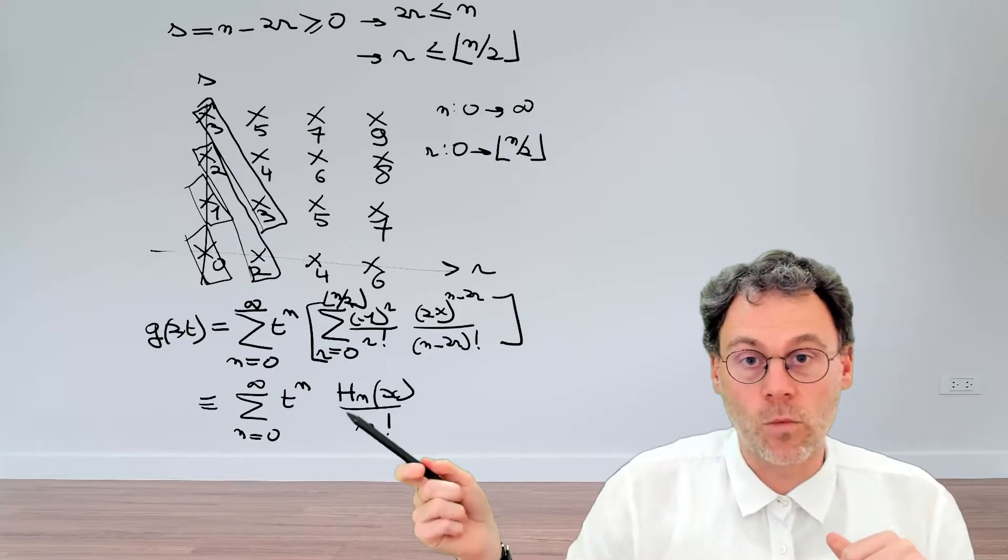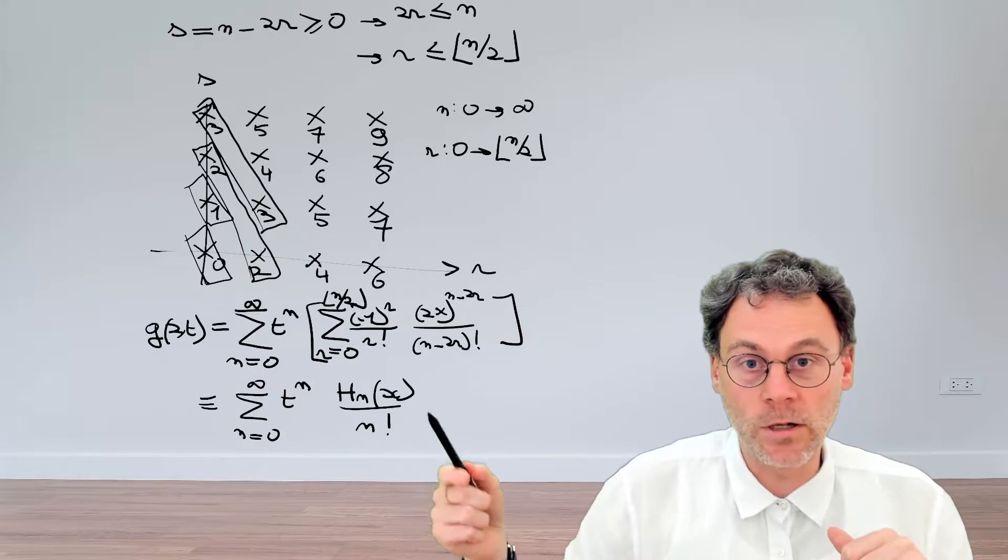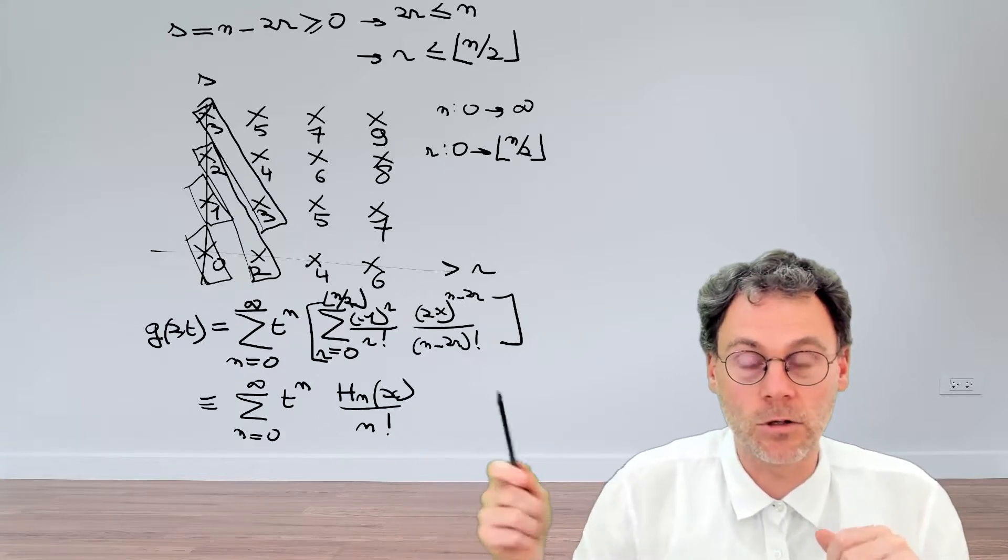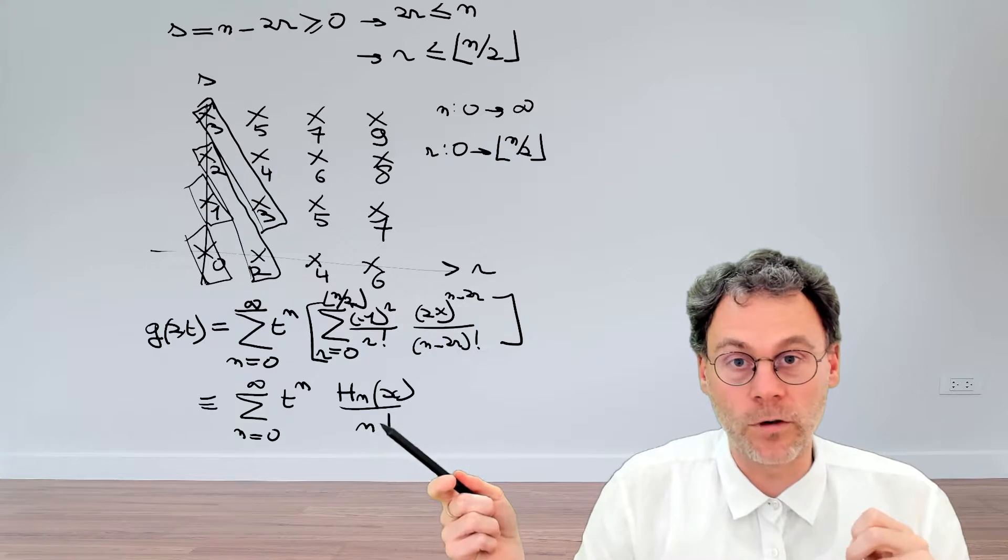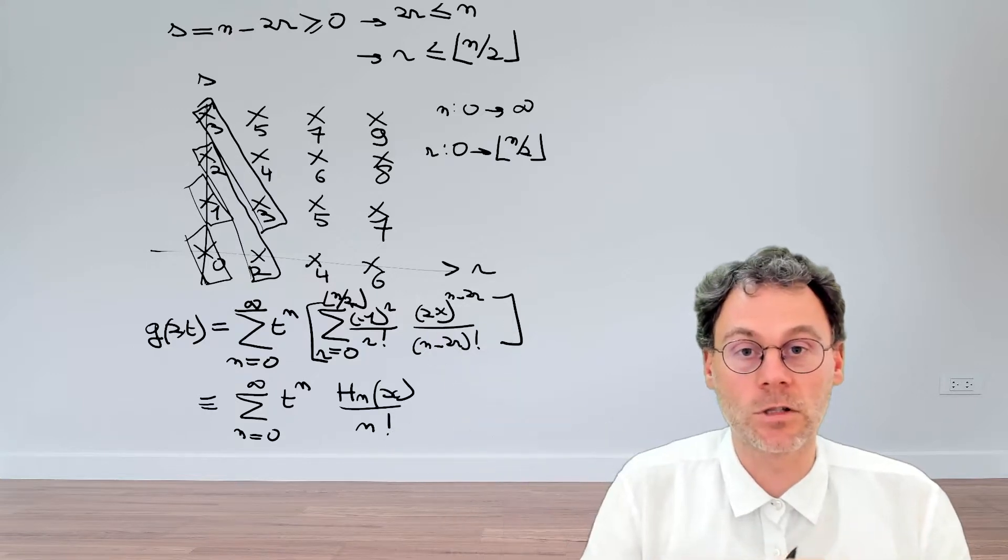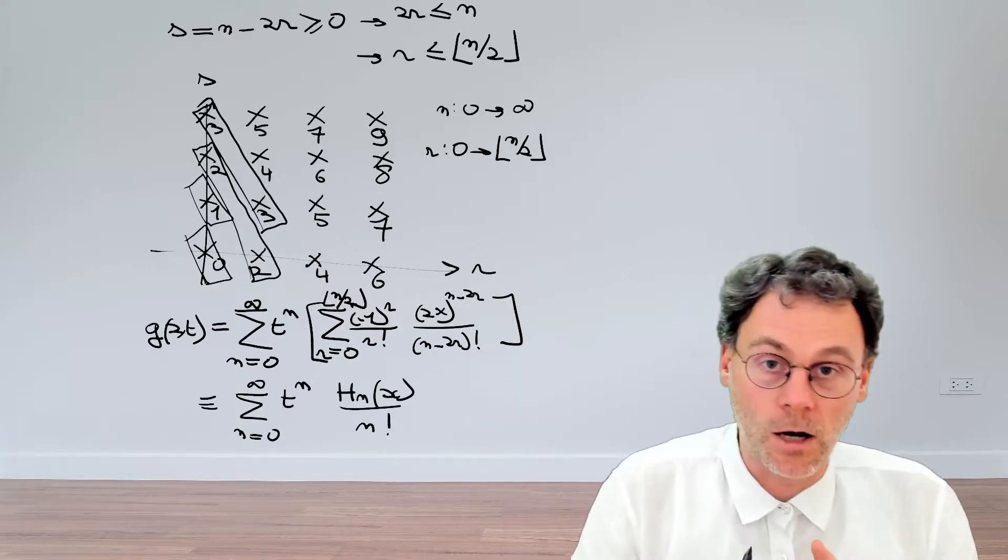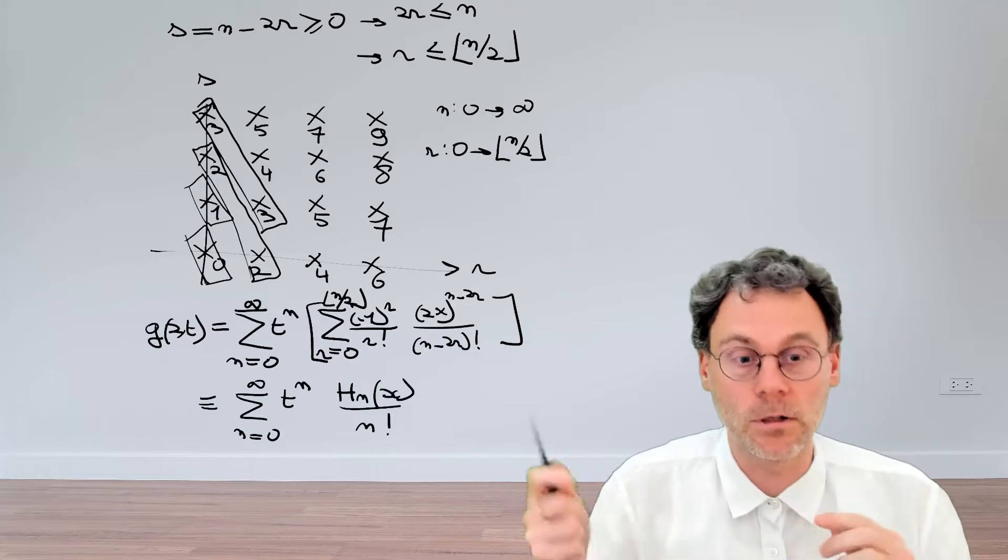By the way, you might wonder why we have this n factorial here in the definition. That's basically just convention, but it will allow for the fact that then all of the coefficients of our Hermite polynomial are nice integers, but that's a different exercise.